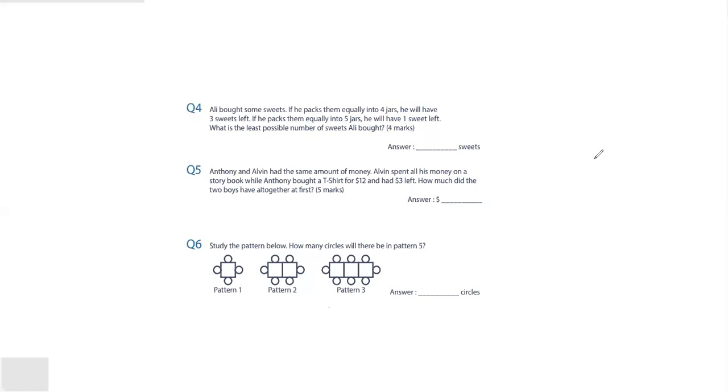Question number four. Ali bought some sweets. If he packs them equally into 4 jars, he will have 3 sweets left. If he packs them equally into 5 jars, he will have 1 sweet left. What is the least possible number of sweets Ali should buy?